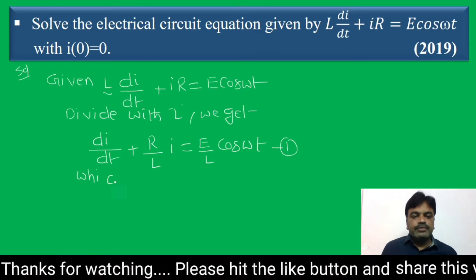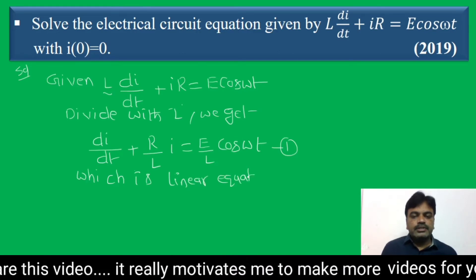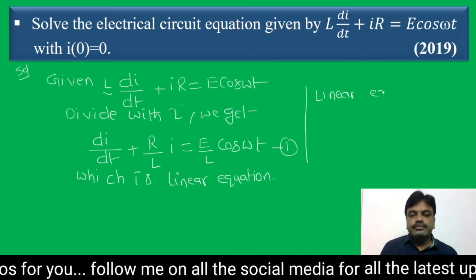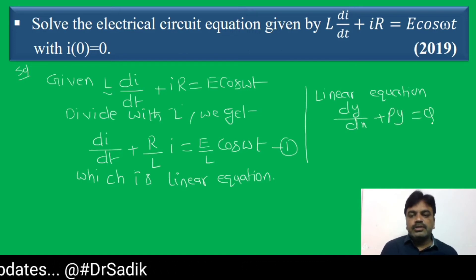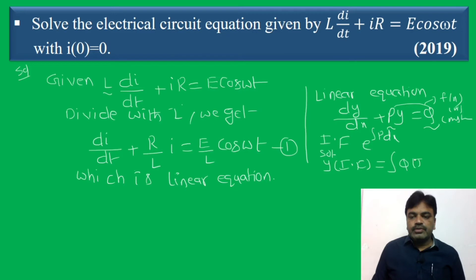Which is a linear equation. The standard form of a linear equation is dy/dx + Py = Q, where P and Q are constants or functions of x. To find the solution of this equation, first we find the integrating factor, which is e^(∫P dx). The solution is y × (integrating factor) = ∫Q × (integrating factor) dx.